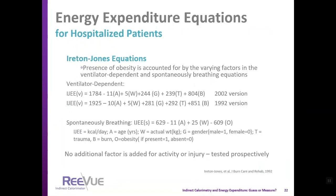The Ireton-Jones equation, developed in 1992, is still used for assessing energy expenditure in hospitalized patients. There are two versions: one for ventilator-dependent patients and one for spontaneously breathing patients. It was recommended in the Academy of Nutrition and Dietetics Evidence Analysis Library. Because it was developed from indirect calorimetry measurements of individuals in the presence of disease or injury, it estimates actual total energy expenditure — no additional factor is needed for activity or injury.